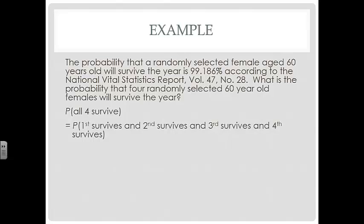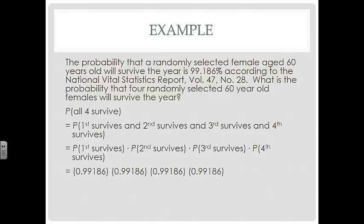So the probability that the first survives, and the second survives, and the third survives, and the fourth survives, means that we're multiplying the probability of each of those. And each of those has a probability of 99.186, or that was percentage, or 0.99186. So when we multiply all those together, we get a 96.78% chance that all 4 of them will survive the year.